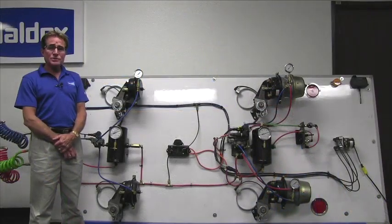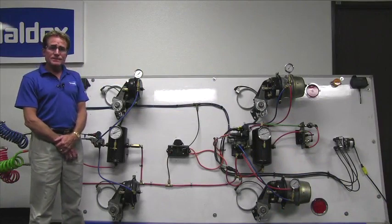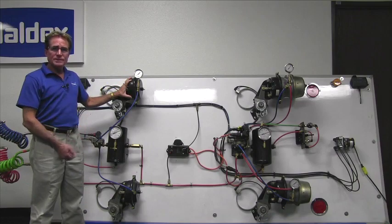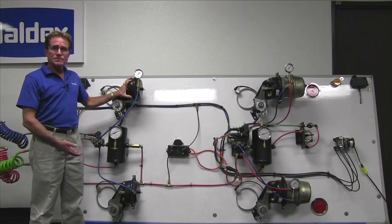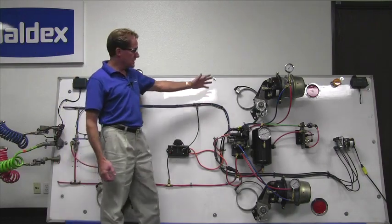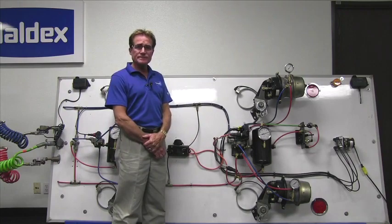The trailer demonstration board I will be using today is in two sections here. The front axle here will represent a dolly type trailer. Some people refer to it as a converter dolly or a con gear. The rear section, back here, this back axle will represent a typical semi-trailer.